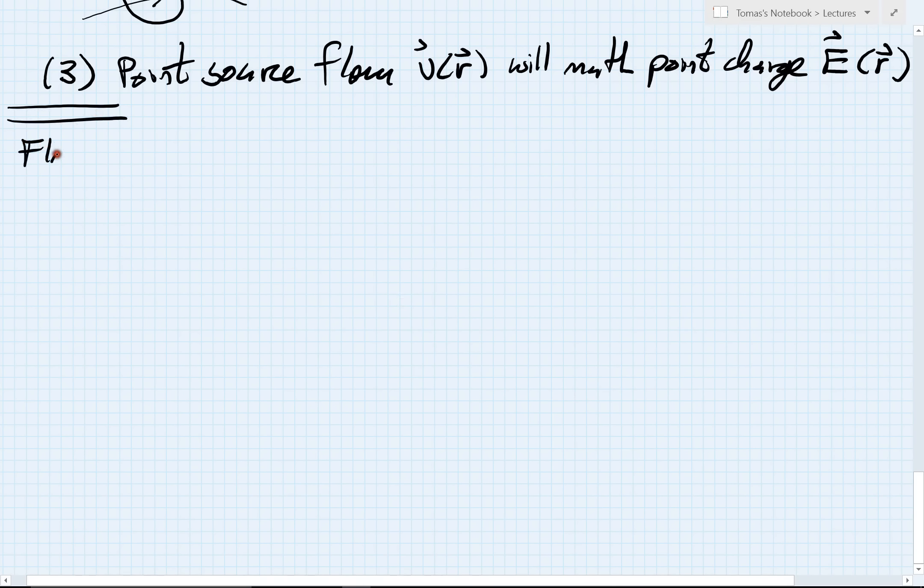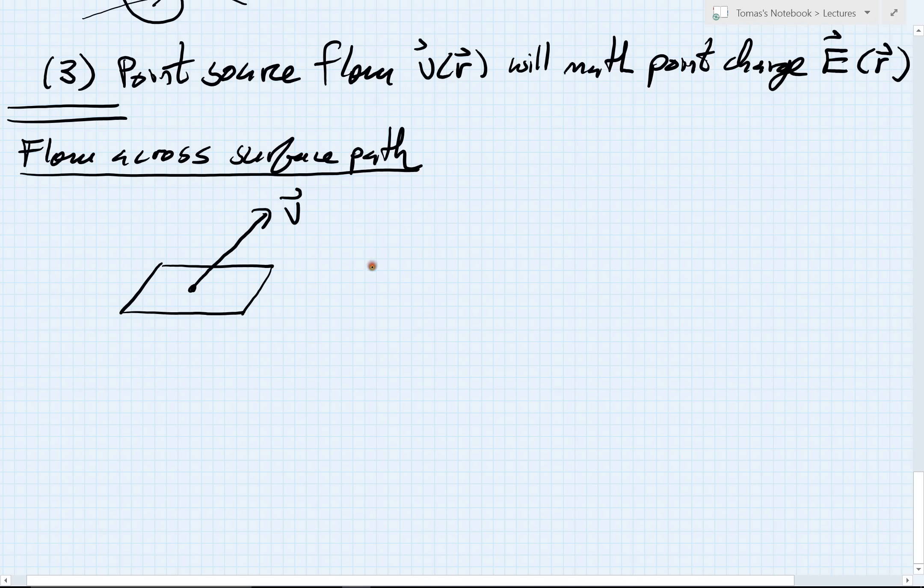Flow across a surface patch. What we're going to imagine is I've got some patch of surface, denoted by this little rectangular patch here, and I have a velocity of fluid flowing through this thing. My velocity vector v specifies the velocity of my flow. My area element, my little patch, has a certain amount of area which I will call delta A.